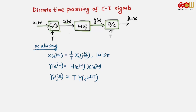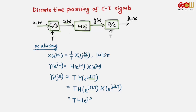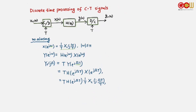Using Y = H · X, we plug in and replace small ω by large Ω·T throughout. We also substitute how X is related to X_c: X(e^jω) = (1/T) X_c(jΩ), evaluated at ω = ΩT, giving (1/T) X_c(jΩ·T/T) = (1/T) X_c(jΩ). After combining, Y_r(jΩ) = H(e^jΩT) · X_c(jΩ) for |Ω| ≤ π/T.